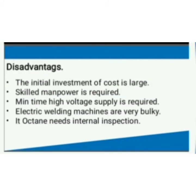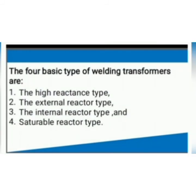Here we see the disadvantages. The essential investment cost is large. Skilled manpower is required. A main type of high voltage supply is required. The electric welding machine is very bulky. It often needs internal inspection. Here we see the four basic types of welding transformer: first, the high reactance type; second, the external reactor type; third, the internal reactor type; fourth, the saturable reactor type.